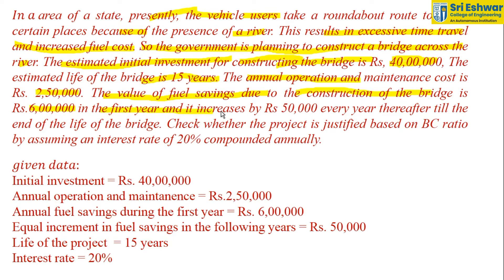The value of fuel savings due to the construction of the bridge is Rs. 6,00,000 in the first year, and increases by Rs. 50,000 every year thereafter till the end of the life of the bridge. Check whether the project is justified based on the BC ratio, assuming an interest rate of 20% compounded annually.